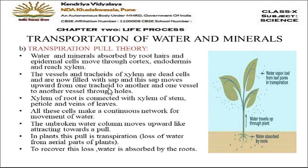Xylem of the root is connected with the xylem of the stem, so water from the root can reach the stem and all parts of the plant. All these cells form a continuous network creating an unbroken water column. As water moves up, it forms a column that moves upward as if someone is pulling it from above.